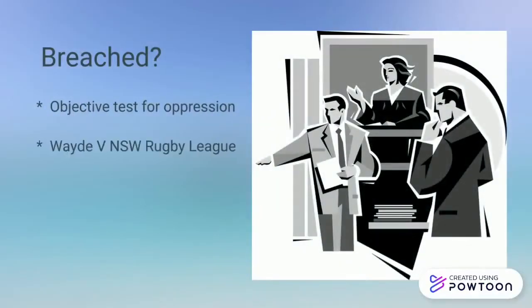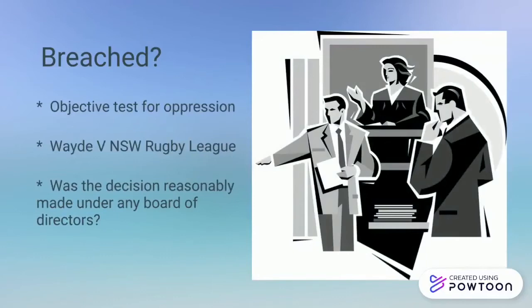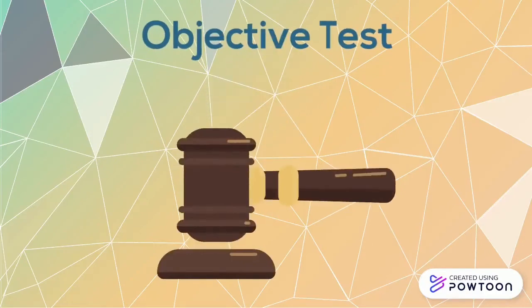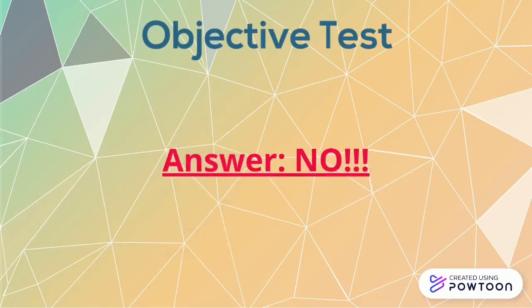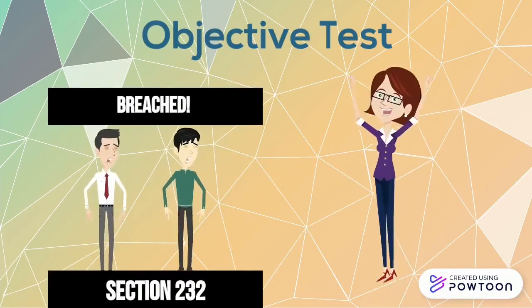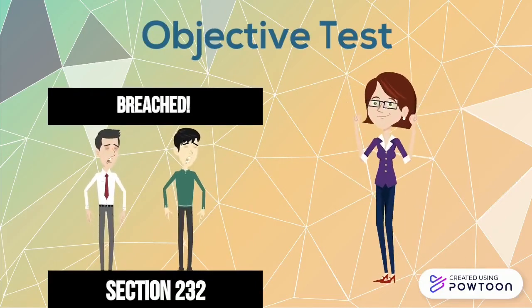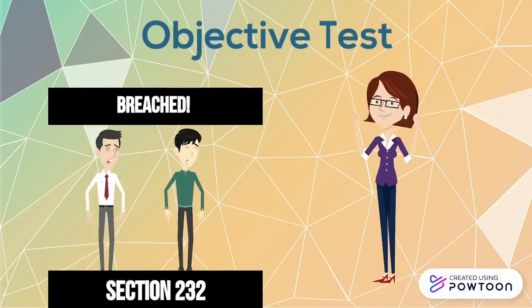Luna applied the objective test for oppression developed from the case Wade v. New South Wales Rugby League: whether Luna's removal from the Board of Directors was reasonably made under any Board of Directors, given the clear bias from Peter and George with their majority voting powers and a clear conflict of interest following allegations from a minority shareholder. The answer is no. This proves Peter and George's action of Luna's removal was oppressive, hence they have breached Section 232 of the Corporations Act.